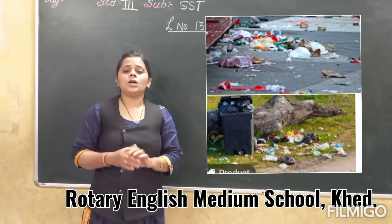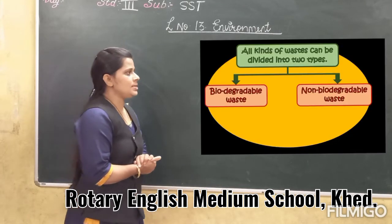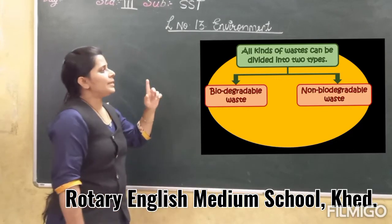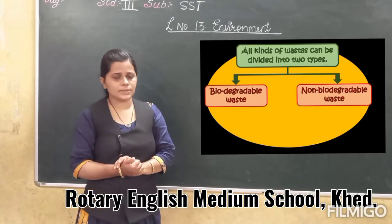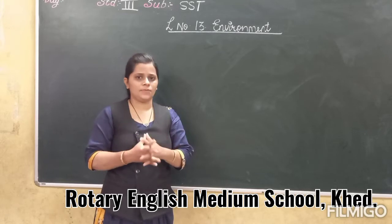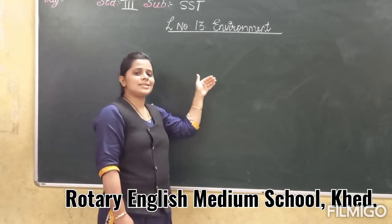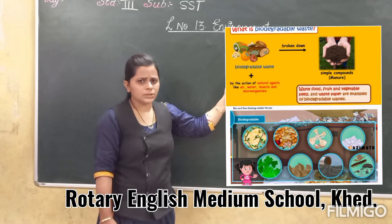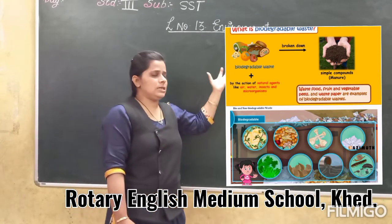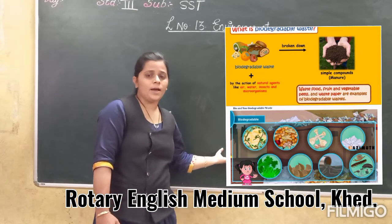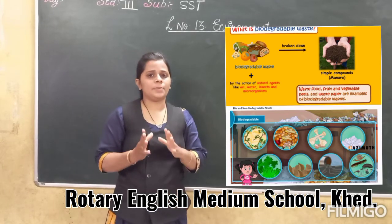Soil gets polluted in two ways: biodegradable waste and non-biodegradable waste. Biodegradable waste means the waste that can be converted into a harmless state by the action of bacteria. In simple words, substances which easily decompose under the soil by the action of bacteria are known as biodegradable waste.